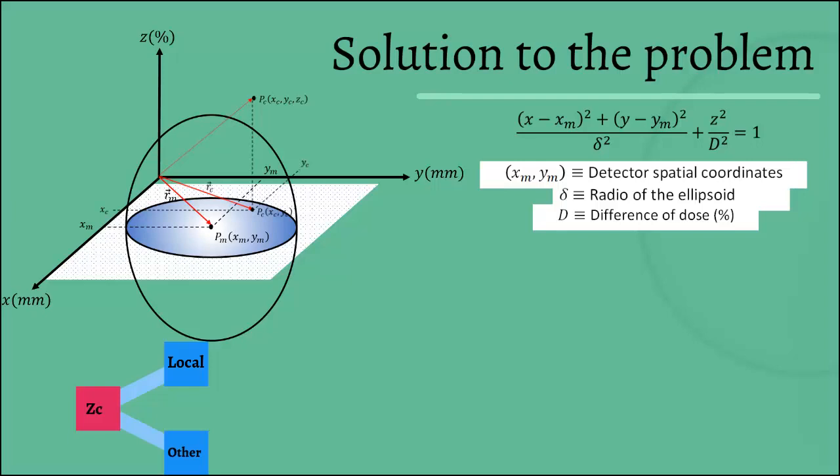Now we'll make a mapping of all the coordinate points XY that are within the surface enclosed by the circumference of delta radio. For that, we'll clear out Z from the equation. But now we'll determine the value XY in all coordinate points XCYC from the planning system.